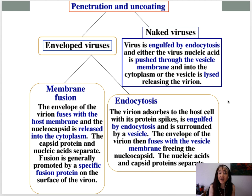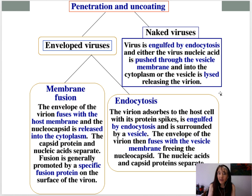Naked viruses don't have these options — they must be taken in by endocytosis. Once inside that low-pH endosome, it often triggers something: maybe the genome is pushed through the endosomal membrane into the cytoplasm, or sometimes the vesicle is lysed, releasing the nucleocapsid so uncoating can occur.